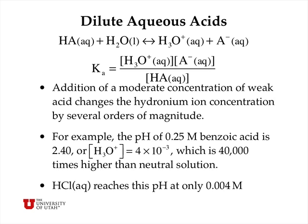If we have a strong acid, then we can reach this pH with only a very small concentration of strong acid — in fact 0.004 moles per liter — because the acid, HCl in this case, dissociates or ionizes quantitatively in aqueous solution to produce all hydronium ions.